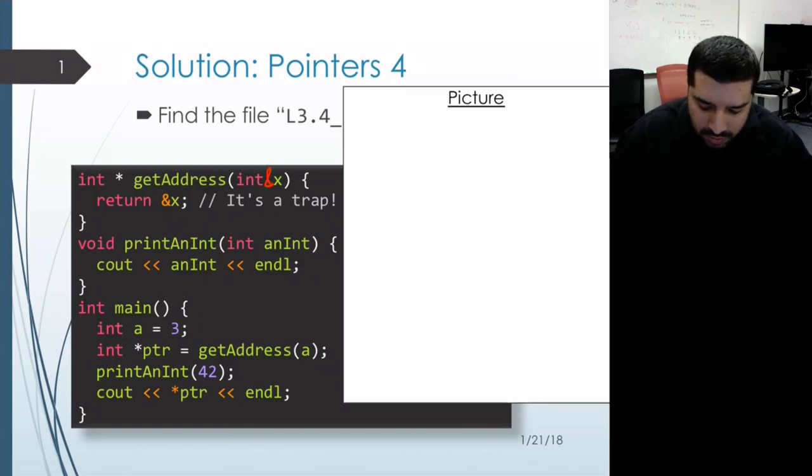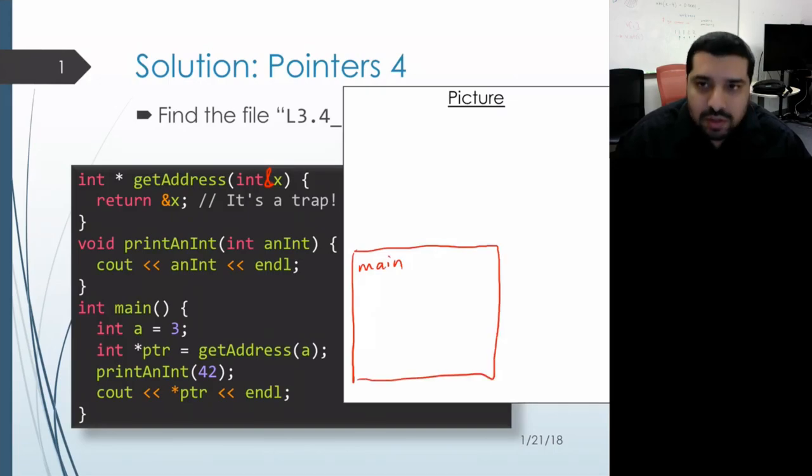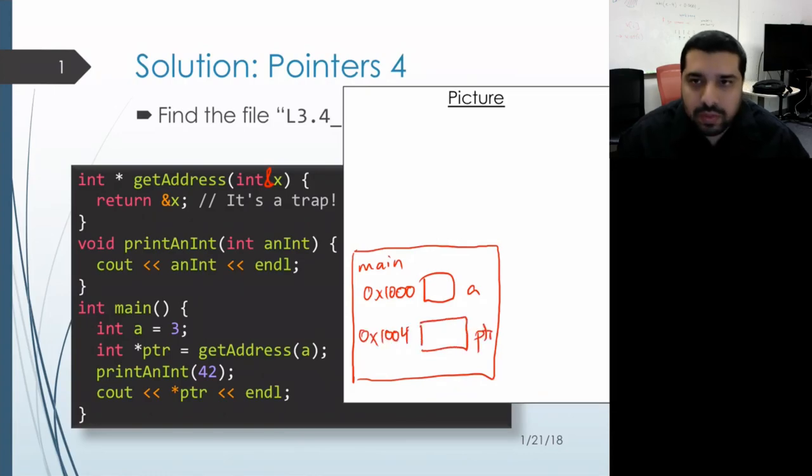And then when we run this code, we start off with an activation record for main as before. And within this activation record, we have space for the local variables. So let's assume that A gets placed at address 1,000 and that PTR gets placed at address 1,004. Now running the code inside of main, A gets initialized to 3.